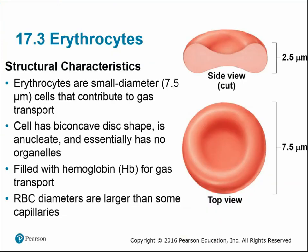Erythrocytes are the red blood cells — small diameter cells that function in gas transport. Their shape is conducive to gas transport: they have a biconcave disc shape and are anucleate, meaning they have no nucleus and essentially no organelles. They are filled with hemoglobin for gas transport — that is their only job. Sometimes the diameter of a red blood cell can be larger than some capillaries, which we'll discuss in the next chapter on blood vessels.